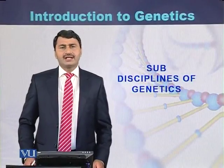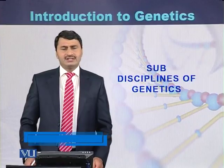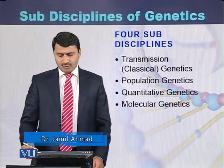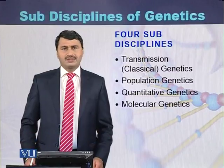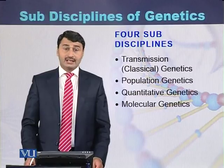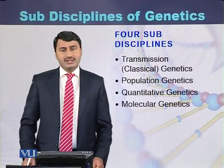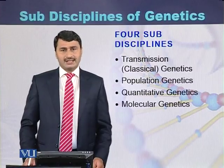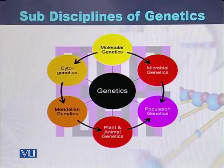Genetics can be classified into four sub-disciplines, although some geneticists classify genetics into many sub-disciplines. But most geneticists classify genetics into four sub-disciplines: transmission or classical genetics, population genetics, quantitative genetics, as well as molecular genetics. These are the four major sub-disciplines of genetics.